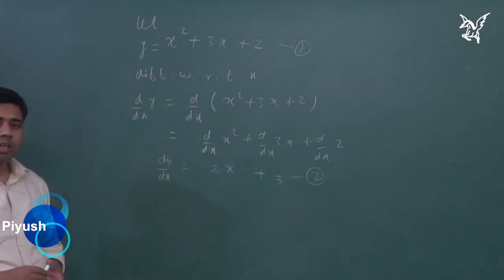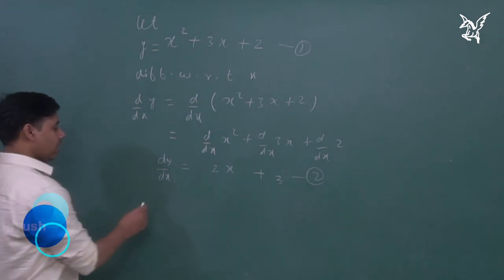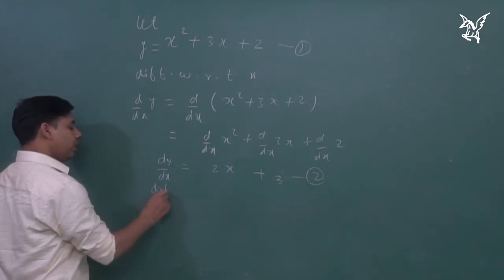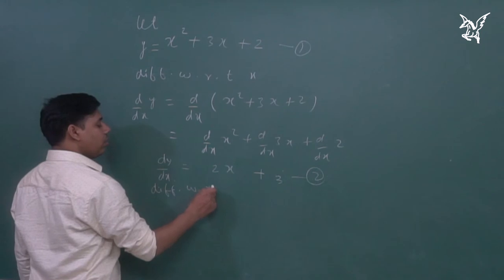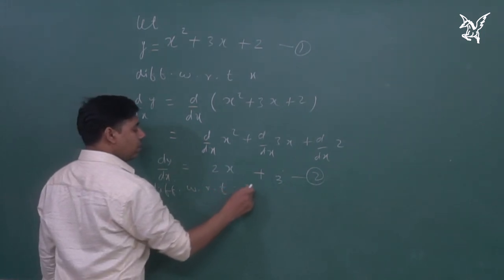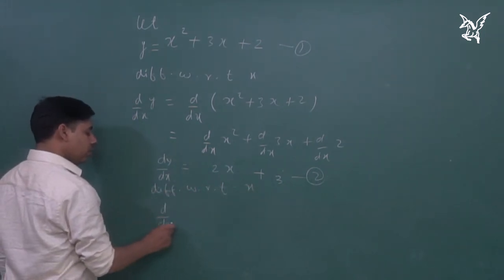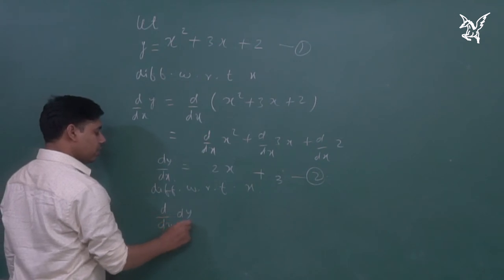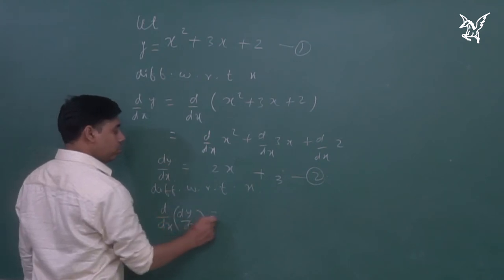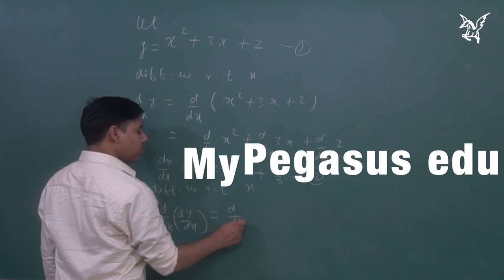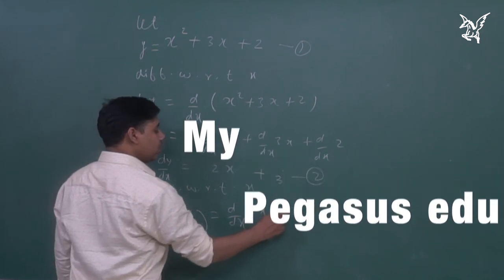But if you have to write double derivative, you have to differentiate this again. So, here we have to differentiate with respect to x. So, d by dx of dy by dx, that is equal to d by dx of 2x plus 3.